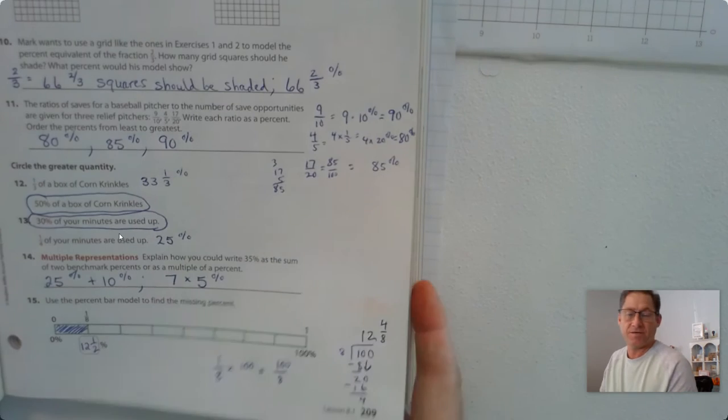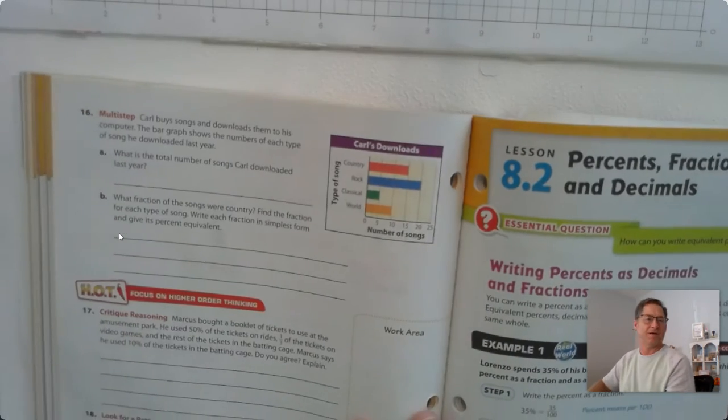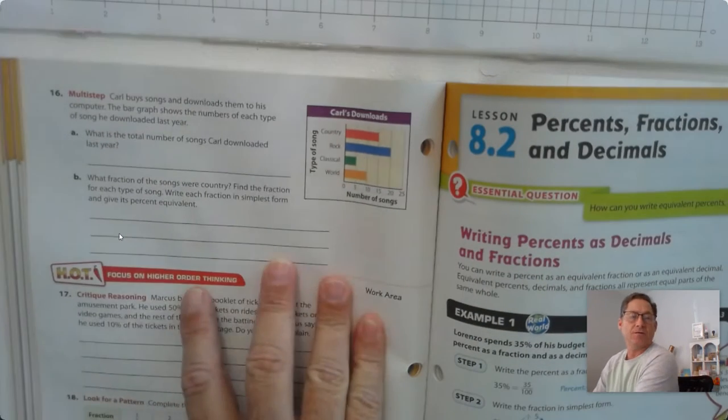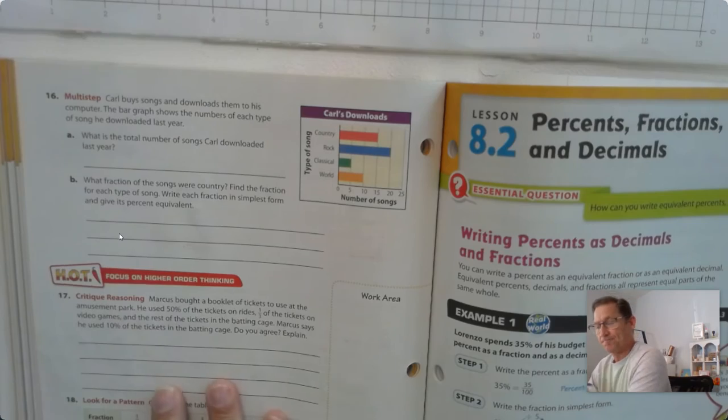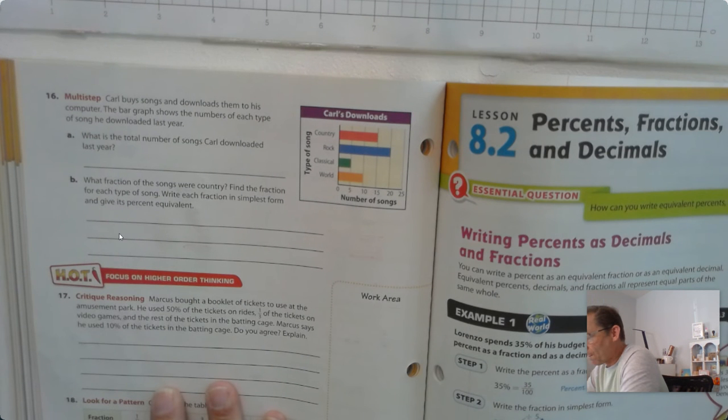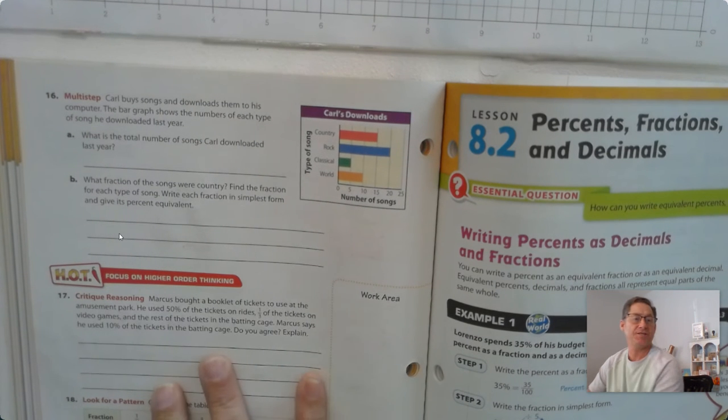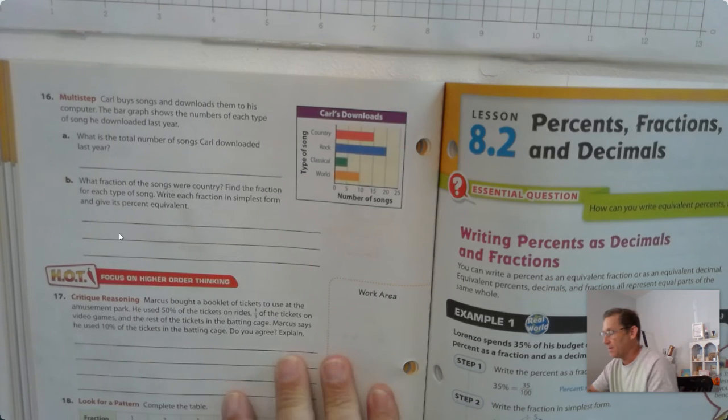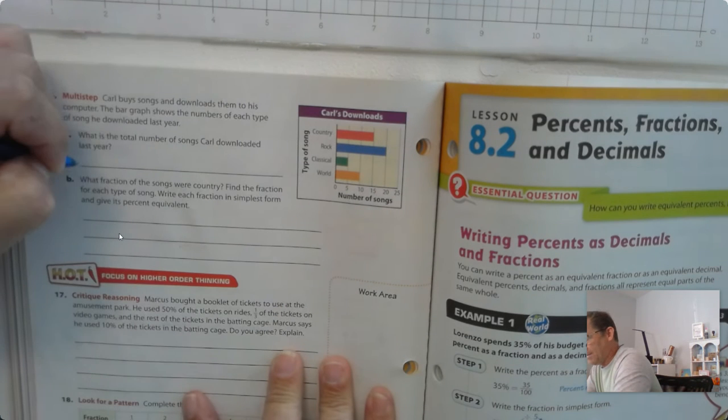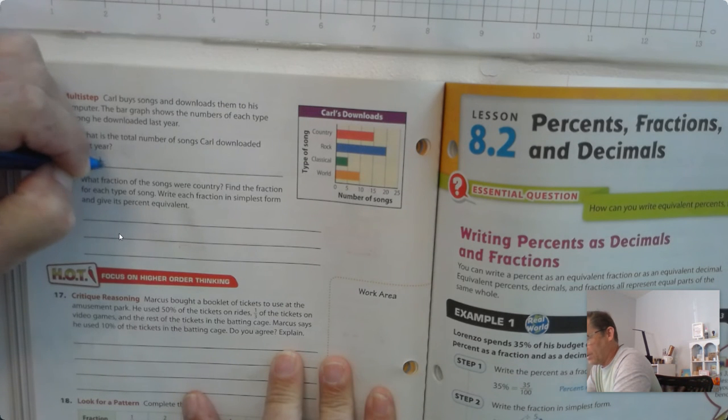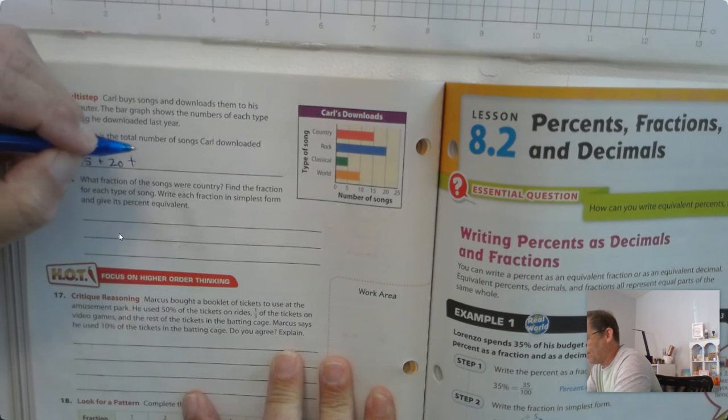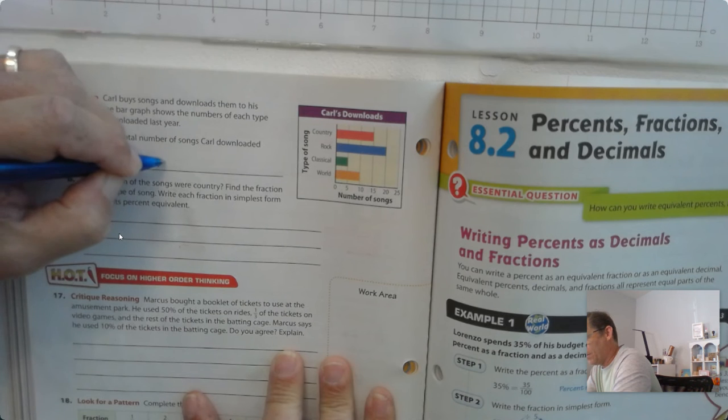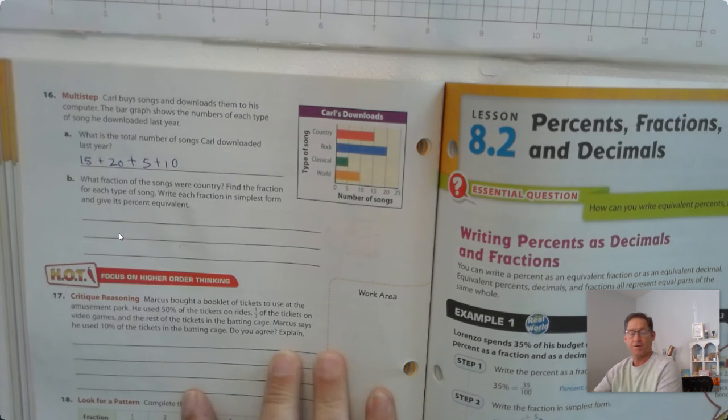Page 210. Number 16. Carl buys songs and downloads them to his computer. The bar graph shows the numbers of each type of song he downloaded last year. What's the total number of songs Carl downloaded last year? Well, we have 15 plus 20 plus 5 plus 10.